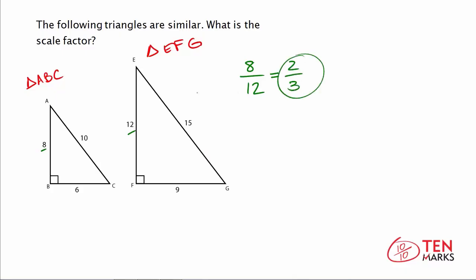Now this is the scale factor. So what this means is you would take 2 thirds and multiply it by any of these measurements in the larger triangle, and you'll get the measurement of the corresponding side length in the smaller triangle.